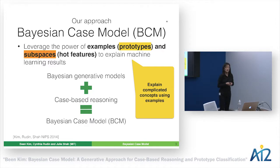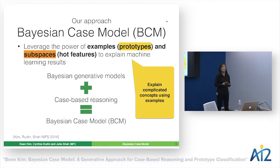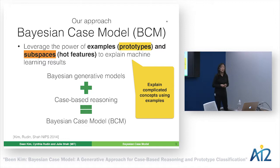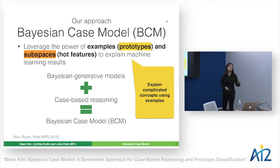So let me introduce our approach: the Bayesian case model. It leverages the power of prototypes — which are basically examples — and subspaces — which are basically important, hot features — to explain machine learning results. Technically, we combine Bayesian generative models with case-based reasoning. It's a fancy way of saying we explain something complicated using examples, because that's how humans think when making decisions.